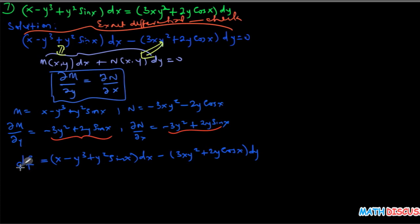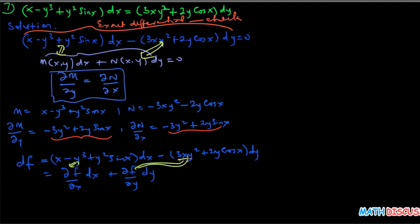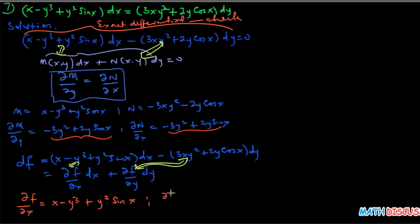By definition, the differential of f is (∂f/∂x) dx plus (∂f/∂y) dy. Comparing terms, this gives us two equations: ∂f/∂x equals (x minus y cubed plus y squared sin x), which is equation one, and ∂f/∂y equals (negative 3xy squared minus 2y cosine x), which is equation two.